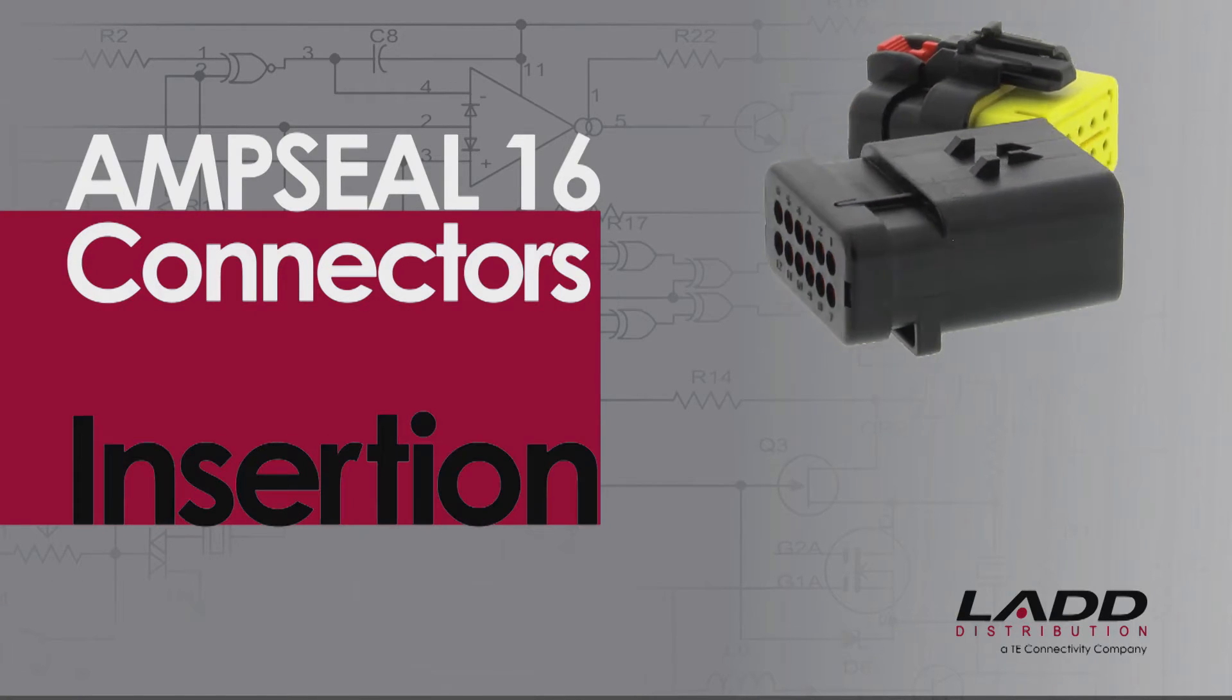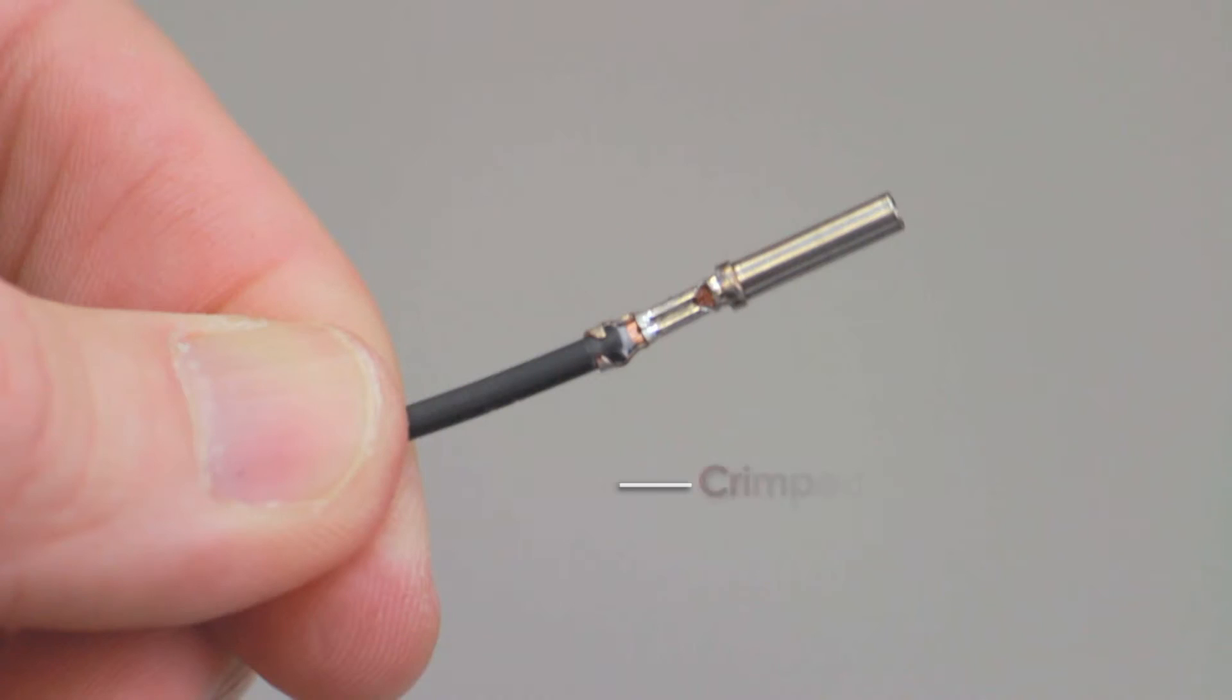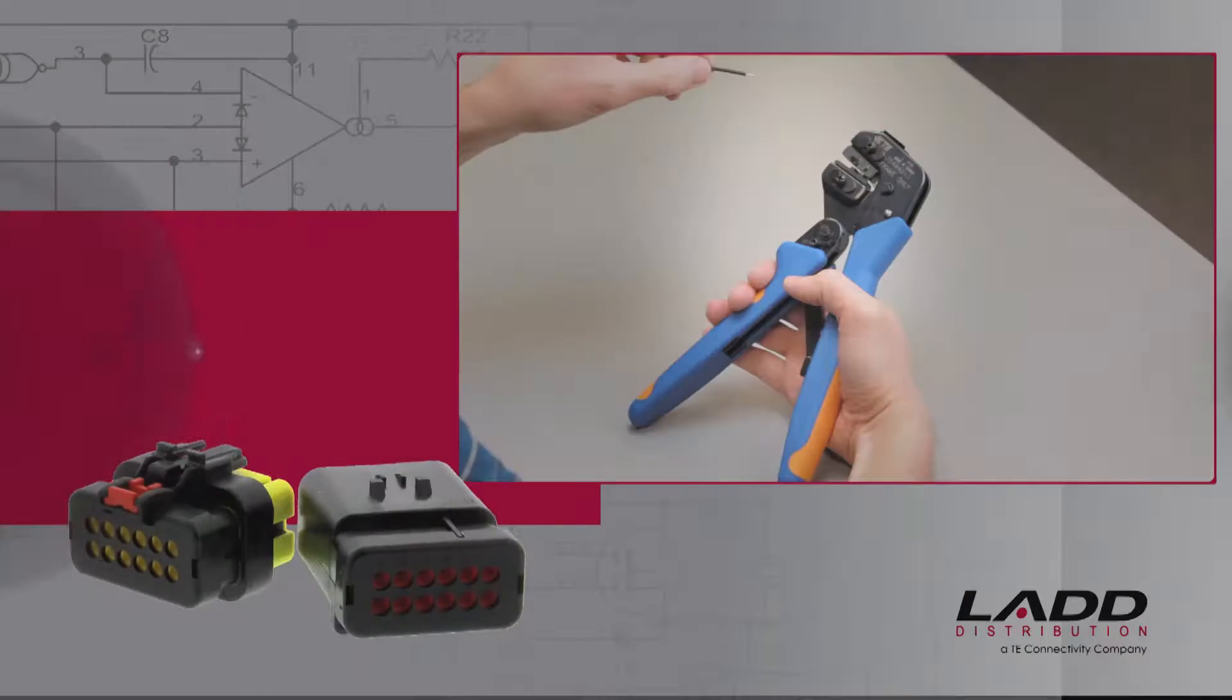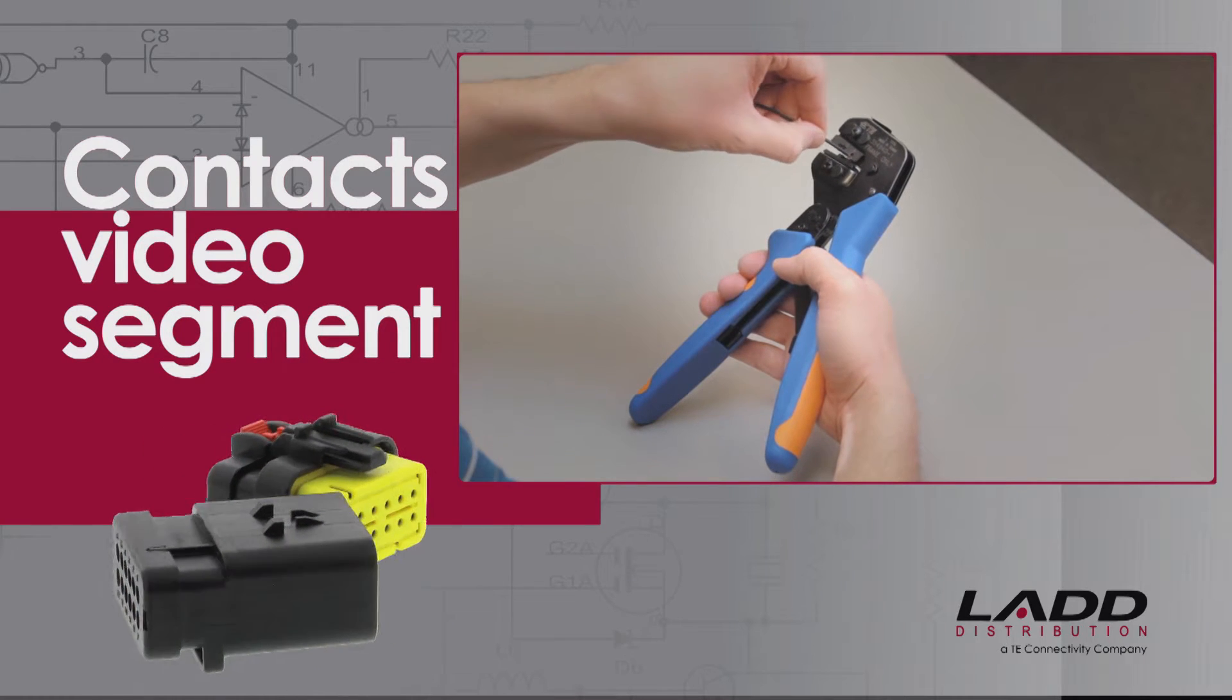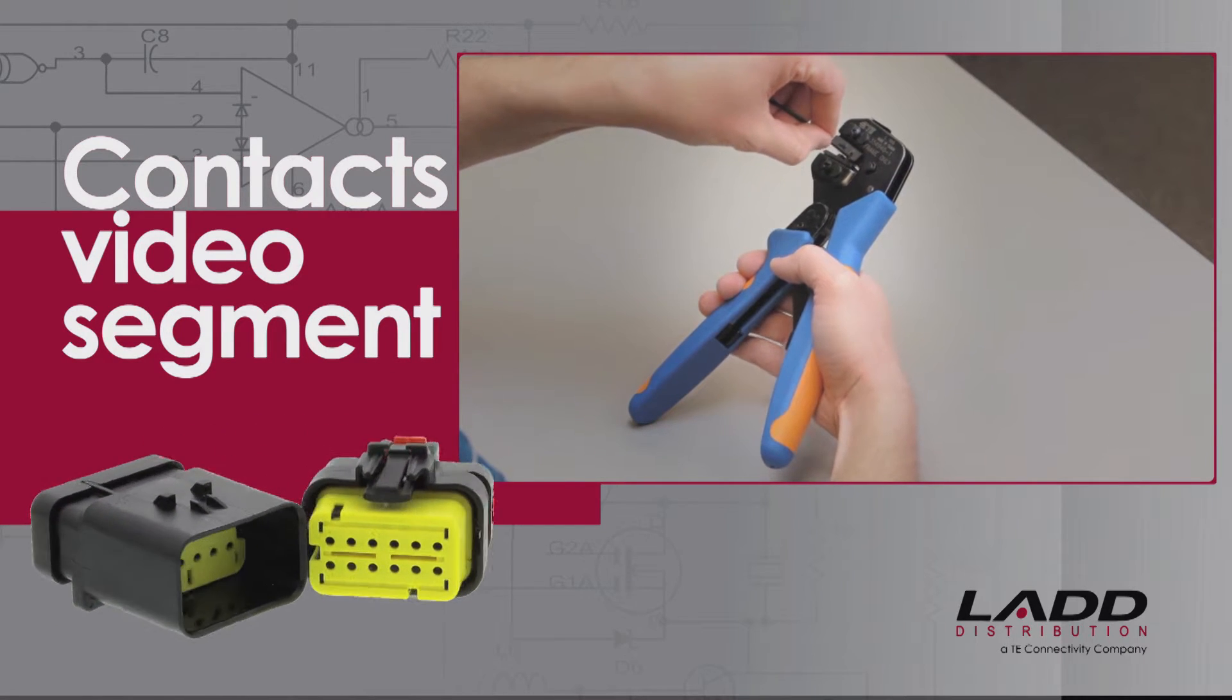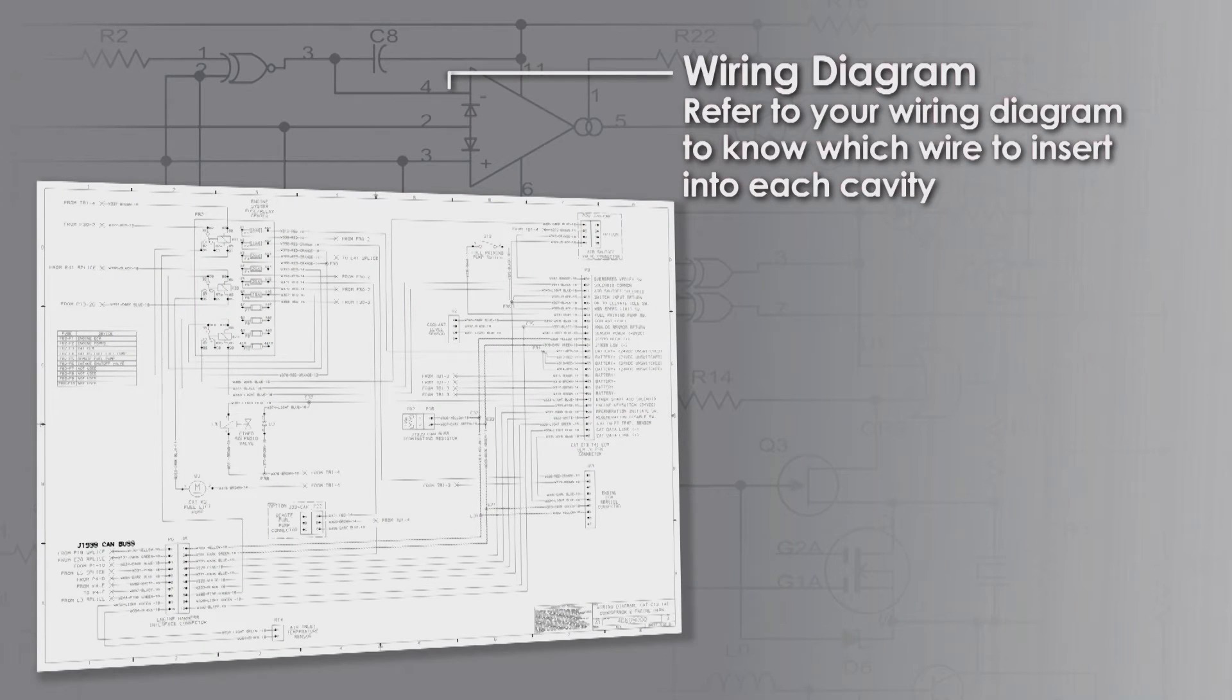AmpSeal 16 contact insertion begins with a crimped wire. For assistance, refer to the AmpSeal 16 contacts video segment for detailed instructions. Refer to your wiring diagram to know which wire to insert into each cavity.